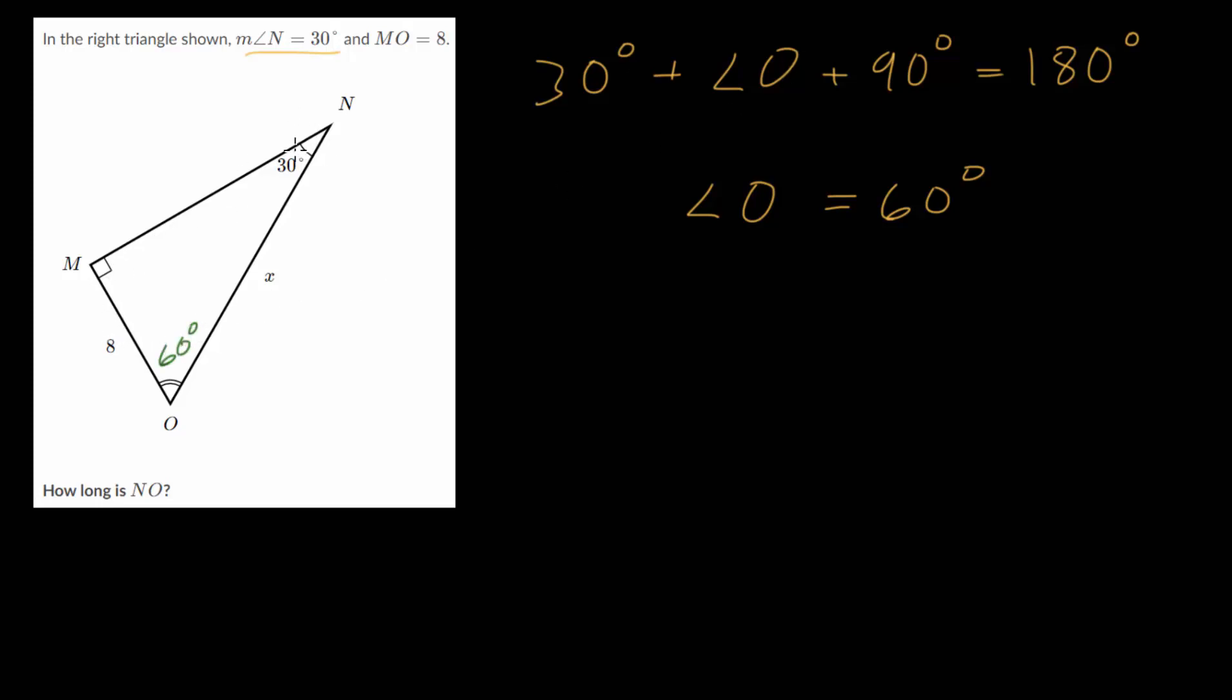And now that we know we have this 30-60-90 right triangle, we can use the relationships between the side lengths of these types of triangles. So let's look at a very generic example.